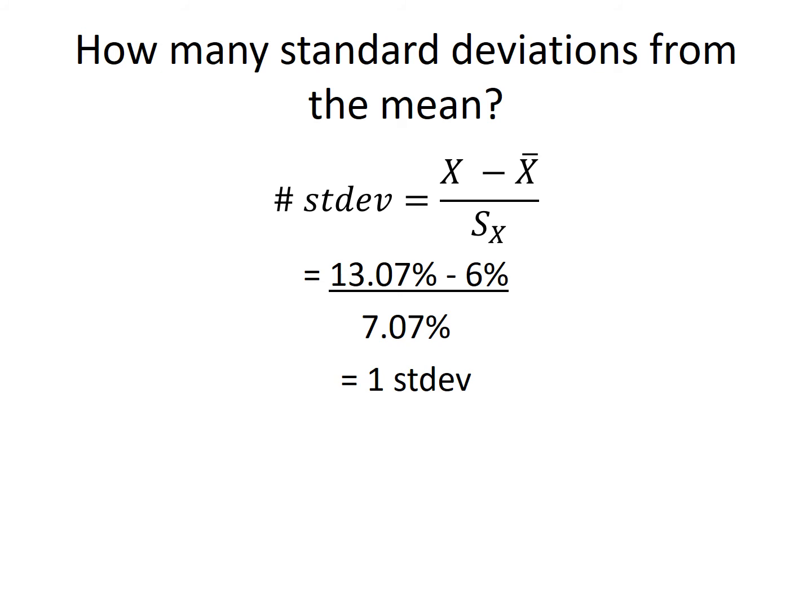Once again, from our TI-BA II Plus, we know it is 7.07%. And if you do the math, the top and the bottom are both 7.07%, so we're looking at exactly one standard deviation above the mean.